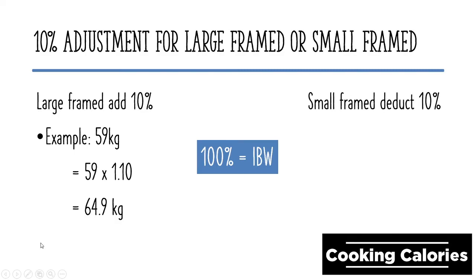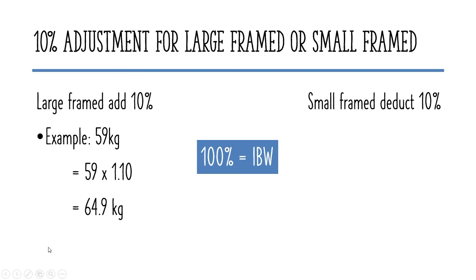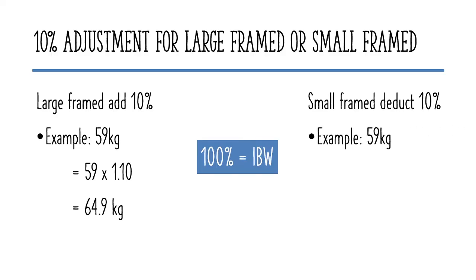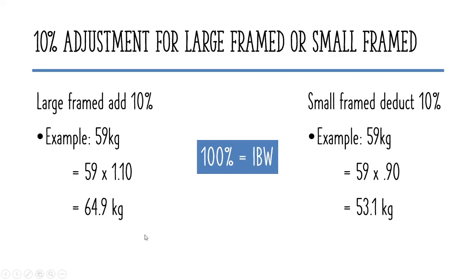For small-framed individuals, we deduct 10% from the calculated ideal body weight. For a person with an ideal body weight of 59 kilograms, multiply 59 by 0.90, since 100% represents the ideal body weight minus 10%. So, 59 multiplied by 0.90 equals 53.1 kilograms.